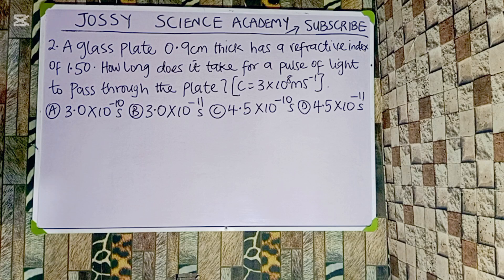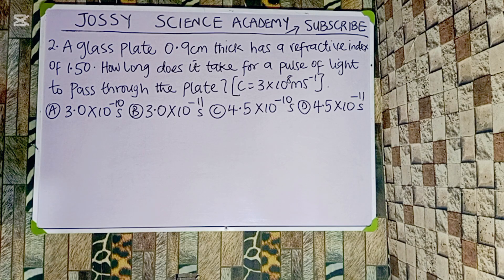A glass plate 0.9 cm thick has a refractive index of 1.50. How long does it take for a pulse of light to pass through the plate? C is given as 3×10⁸ m/s. Options: A) 3.0×10⁻¹⁰ s, B) 3.0×10⁻¹¹ s, C) 4.5×10⁻¹⁰ s, D) 4.5×10⁻¹¹ s.